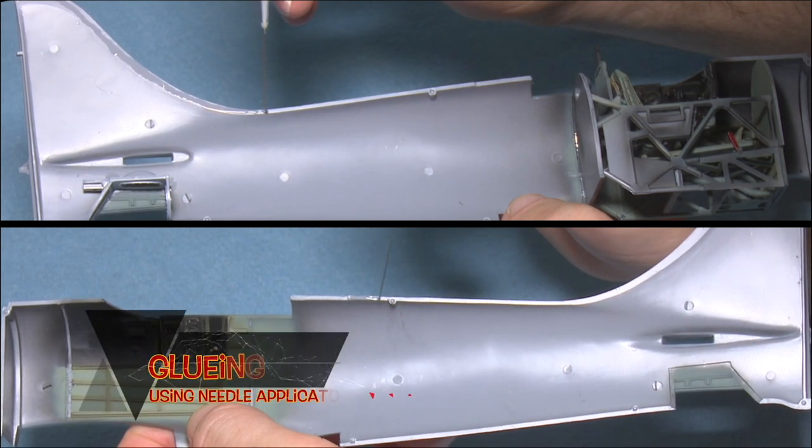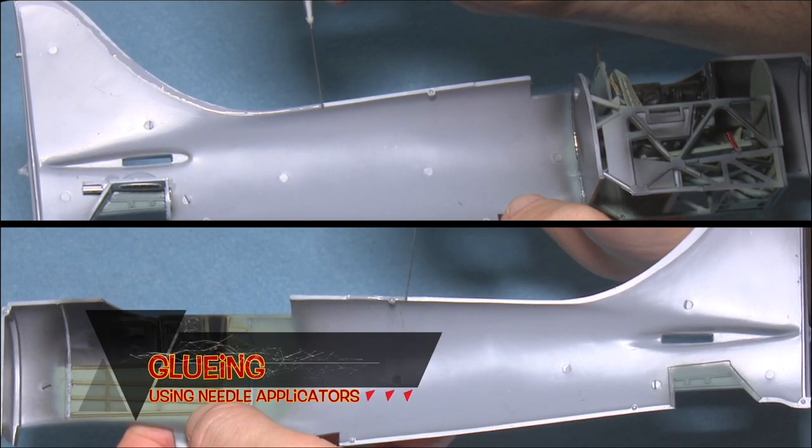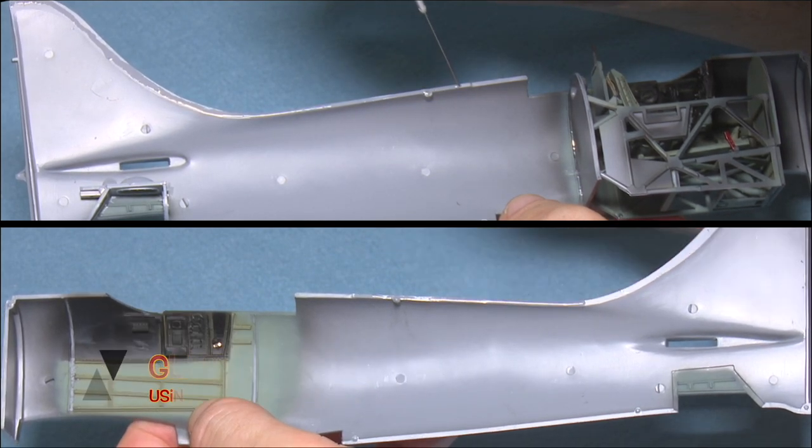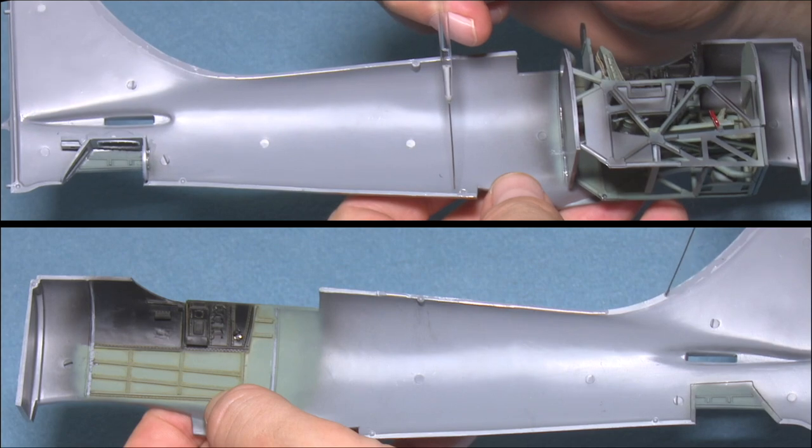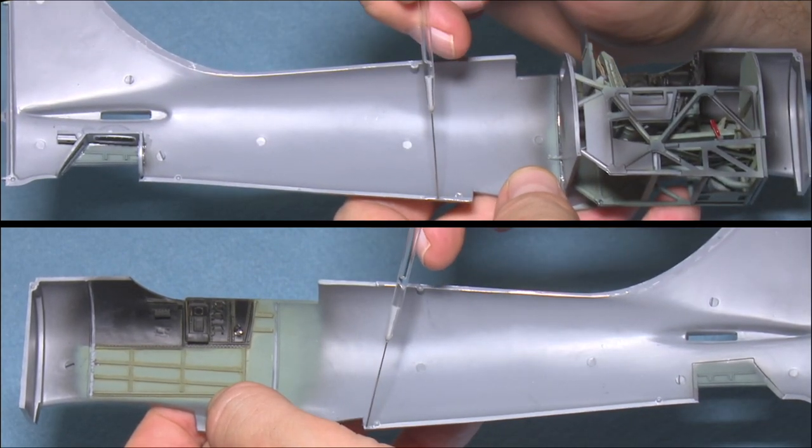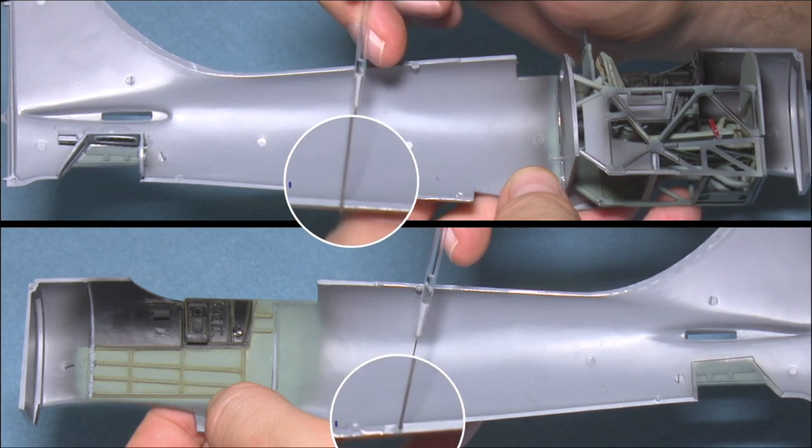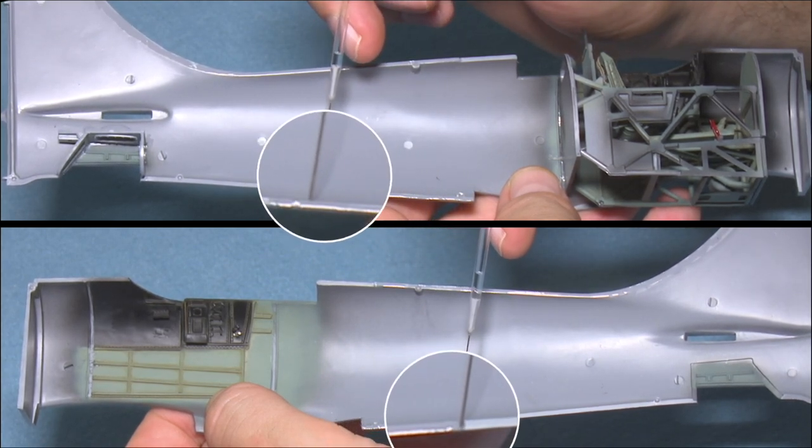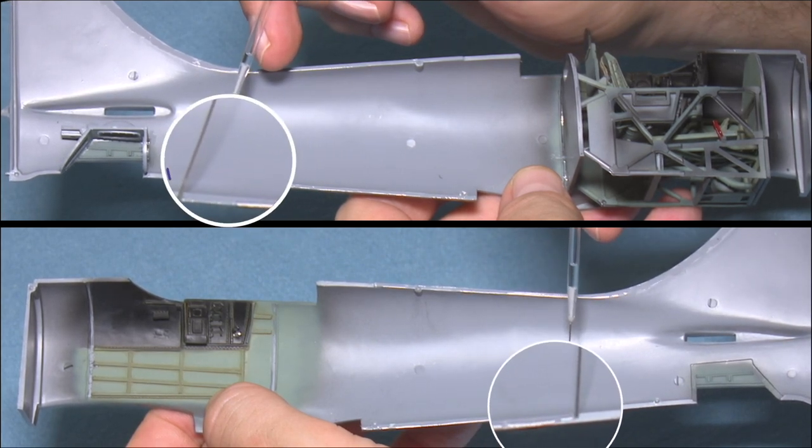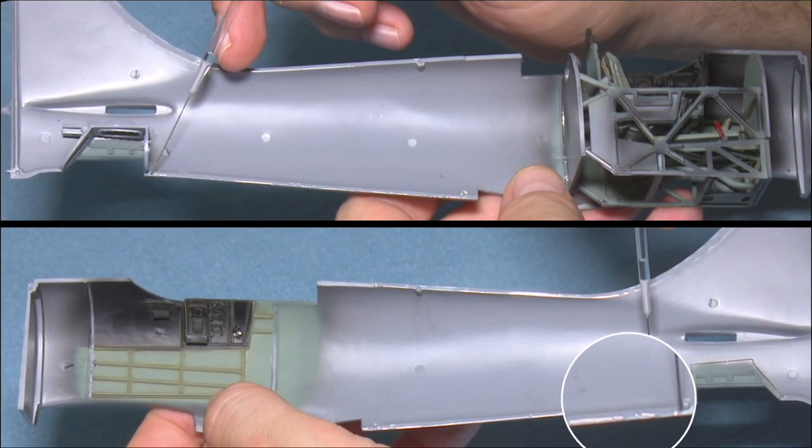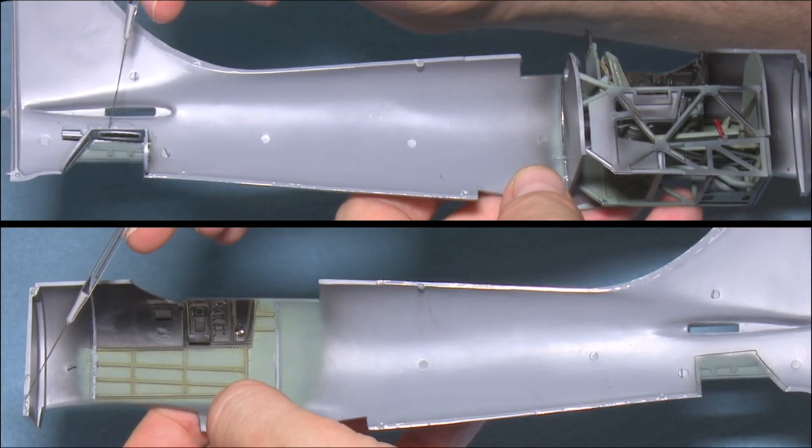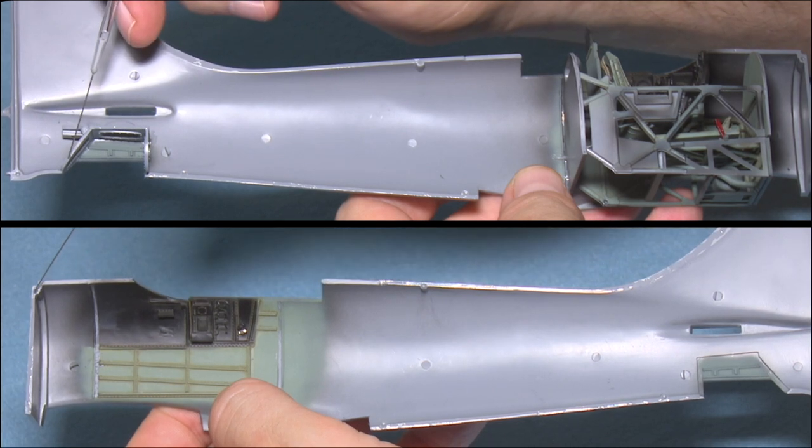When gluing the traditional two fuselage halves, such as that of World War II aircraft, I find that one of the best methods of applying the glue is actually using a needle applicator. The way that this works is the glue just runs at a constant pace down the needle, which means that you need to keep the needle moving across the surface, but you will get a constant stream of glue.